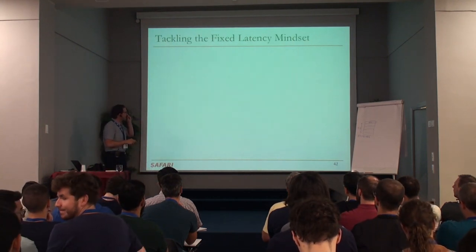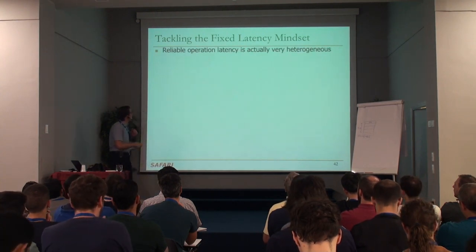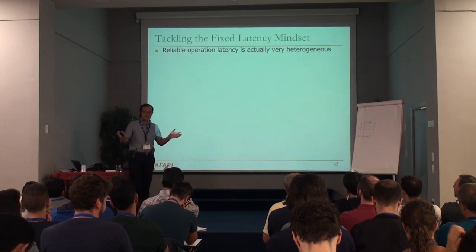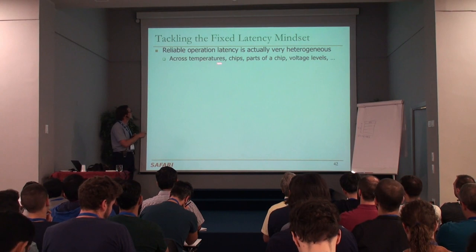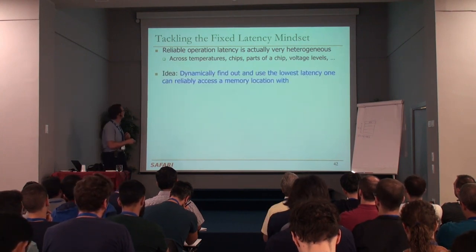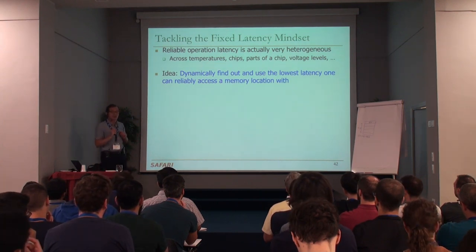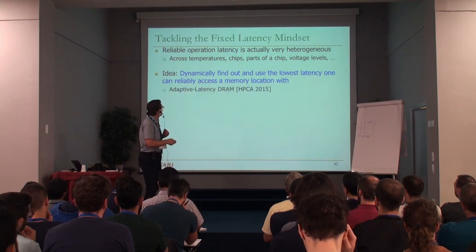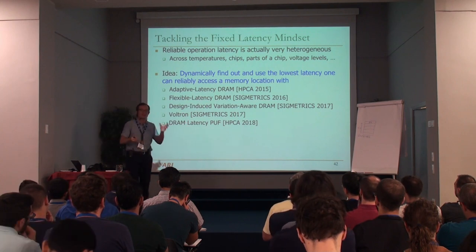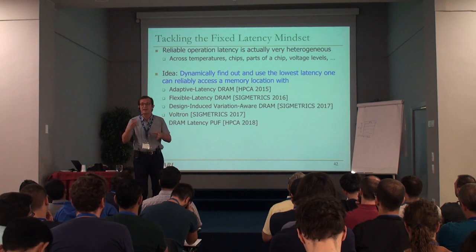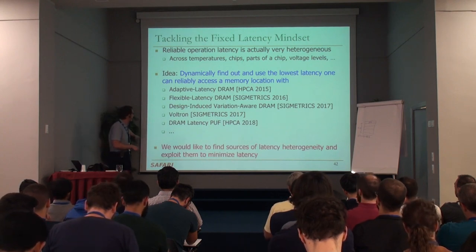Reducing latencies also makes systems more energy efficient. We have a fixed-latency mindset when designing memory, but the actual reliable operation latency is very heterogeneous — across temperatures, across chips, across parts of a chip, across voltage levels. The overarching idea is finding and using the lowest latency at which one can reliably access a memory location, ideally done dynamically. We'll look at adaptive latency DRAM, the latency-reliability trade-off, and its use to design a physically unclonable function in DRAM.